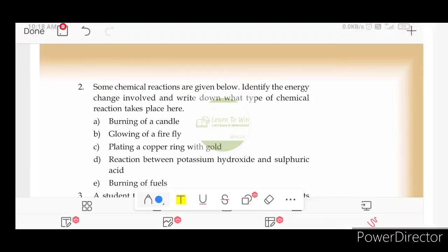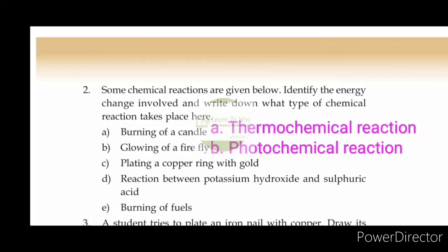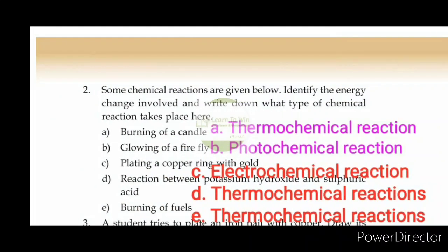Some chemical reactions are given below. Identify the energy changes involved and write down what type of chemical reactions take place here. The burning of a candle is a thermochemical reaction. The heat will begin. The glowing of a firefly is a photochemical reaction. The firefly is light. The plating of a copper ring with gold involves electrolysis. The reaction between potassium hydroxide and sulfuric acid. Thermochemical reaction is burning of fuels, burning of candles, burning of paper. This is a thermochemical reaction.